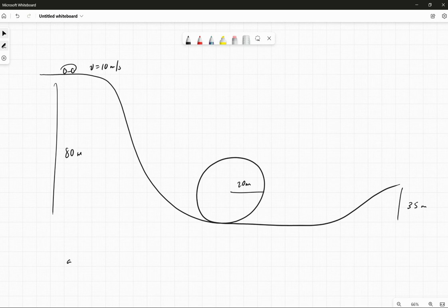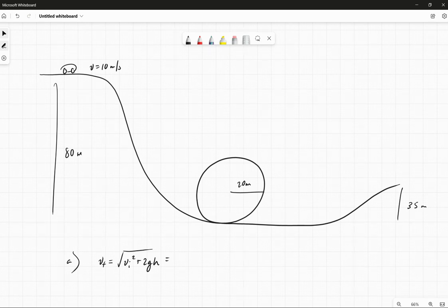So we want to know for part A, how fast is it going at the bottom of the loop? So the final speed, we'll call VF, is going to be the square root of the initial speed squared plus 2G times the height of the roller coaster, which is 80 meters. So 160 times 9.8 plus 100, let me take the square root, this should be 40.84 meters per second.